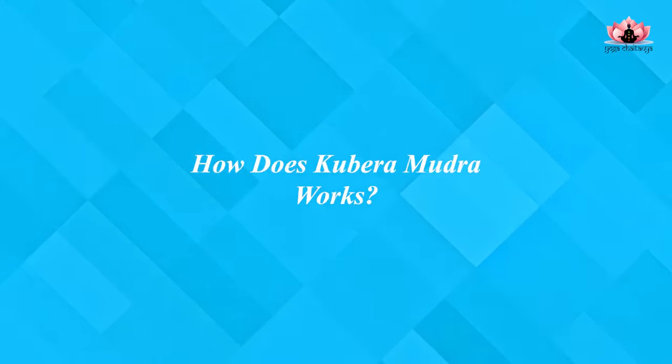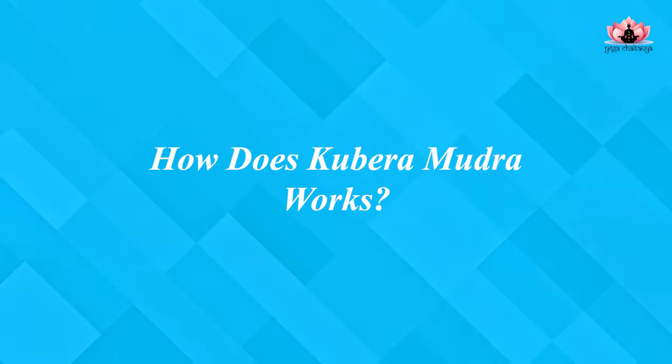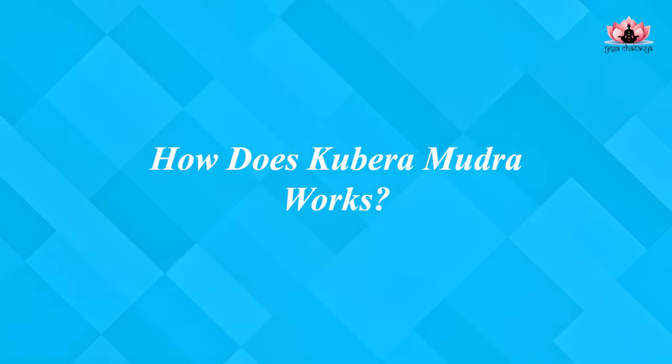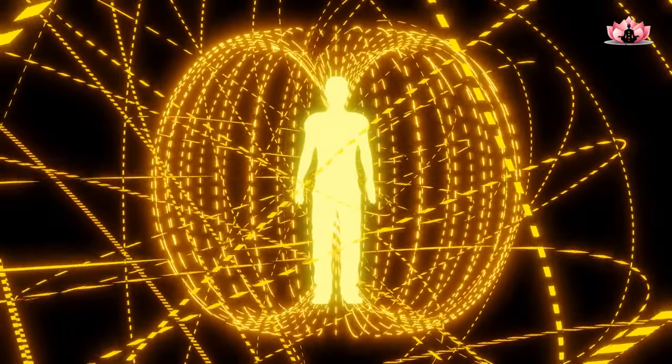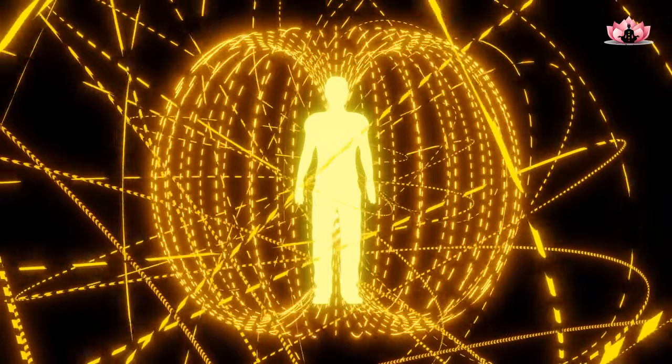Understanding Kuber Mudra: Kuber Mudra is a combination of three yoga mudras — Vyan Mudra, Surya Mudra, and Varun Mudra. Kuber Mudra gives the combined benefits of all three by working on all five elements. How does Kuber Mudra work? It works by channelizing the energy of wealth and prosperity from the universe into the practitioner.